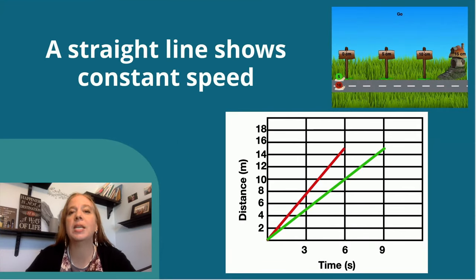Constant speed is a straight line on a motion graph. Here the red snail again shows that it's moving a little bit faster than the green snail.